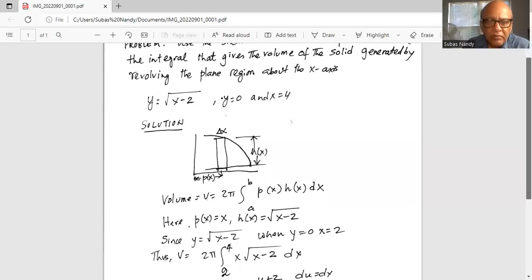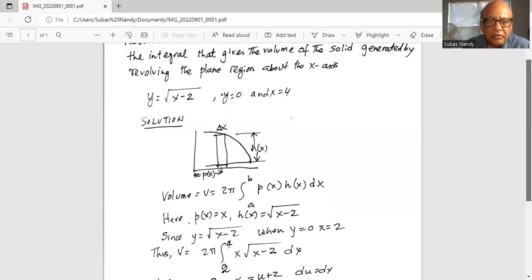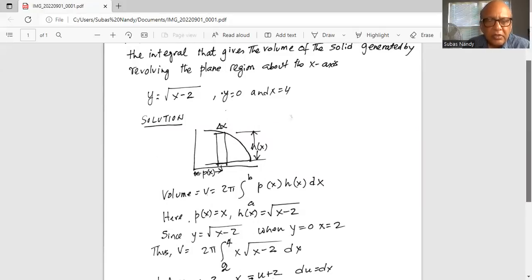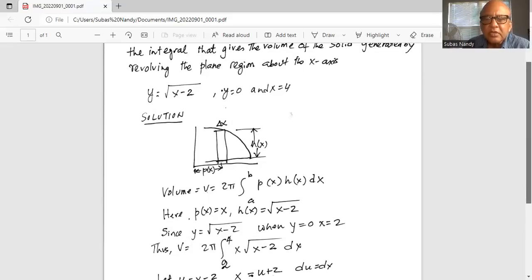Okay so the volume is 2 pi, integration from lower limit of 2 to upper limit of 4, and here p of x is equal to x, times square root of x minus 2 dx.